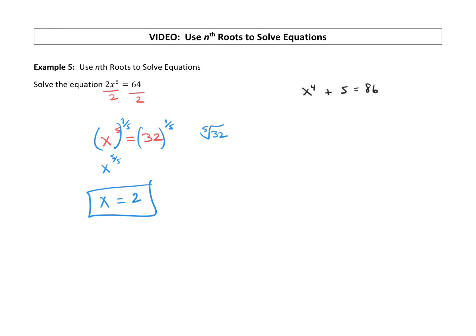Now if you remember, any time you solved x to the second power, you got two answers, a plus or minus. So we want to make sure we consider this when solving these equations as well. Let's isolate x to the fourth by subtracting 5 from both sides. So x to the fourth power equals 81.